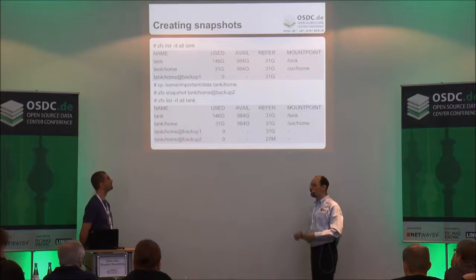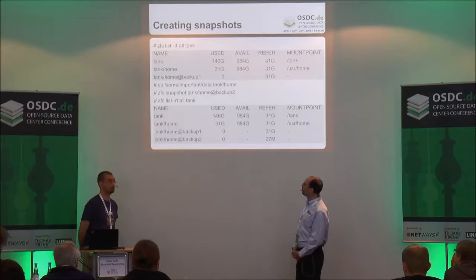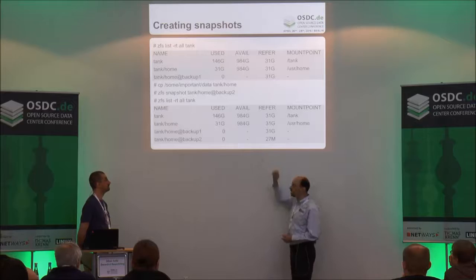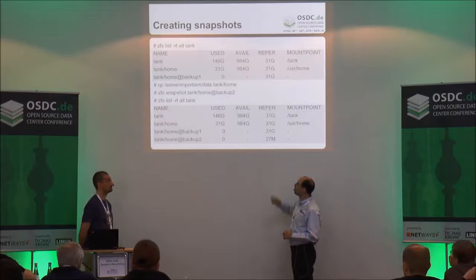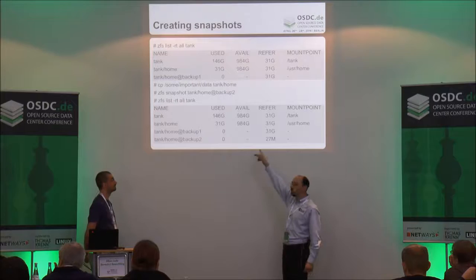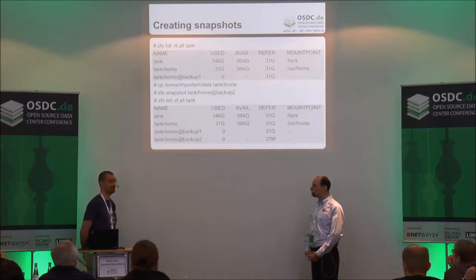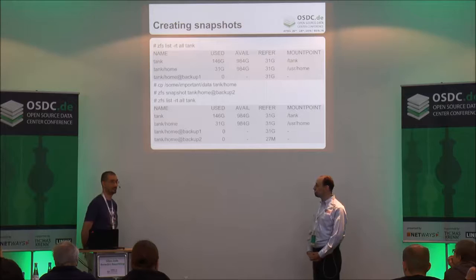After making some changes — a user storing files or doing backups — you take a second snapshot. When you look at the ZFS list output, you can see that only the data changes between the first and second snapshots were recorded: 27 megabytes in this case. It's only the difference between your last snapshot and the first one, not the full 31 gigabytes. In the end, you have three complete copies of your 31 gigabytes in different states, but only consumed an extra 27 megabytes.